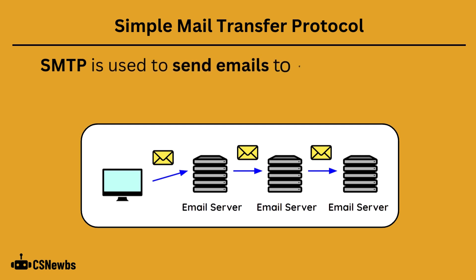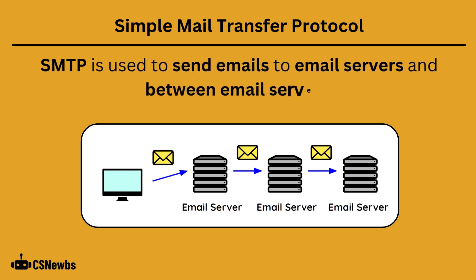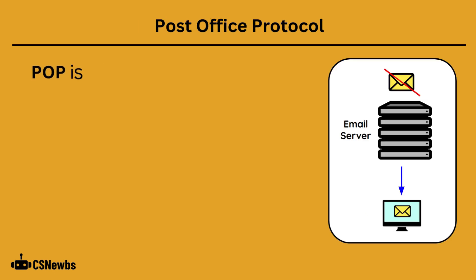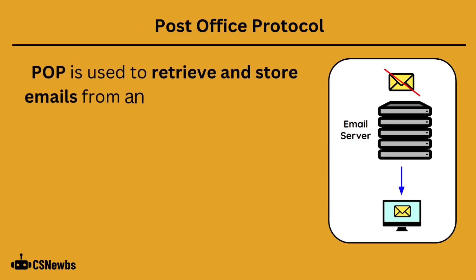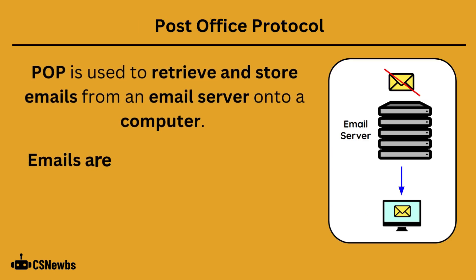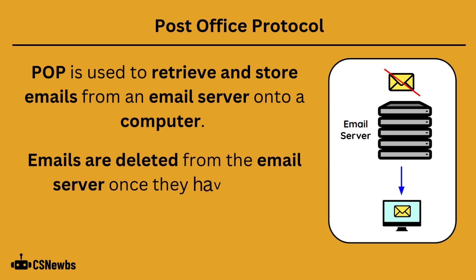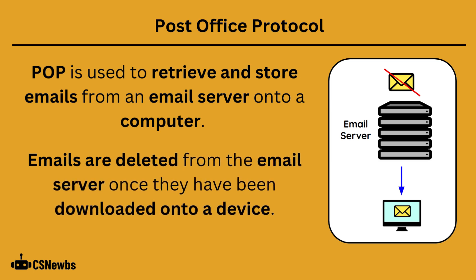SMTP is used to send emails to email servers and between email servers. POP is used to retrieve and store emails from an email server onto a computer. Emails are deleted from the email server once they have been downloaded onto a device.